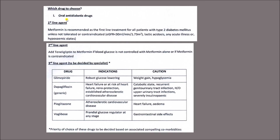There are first-line, second-line, and third-line drugs. The first-line drug is metformin — the biguanide — started at a low dose and increased up to the maximum tolerable level. When metformin at maximum tolerable dose is not working adequately, the second-line drug is teneligliptin. Third-line agents include glimepiride (a sulfonylurea), SGLT-2 inhibitors like dapagliflozin, pioglitazone (a thiazolidinedione), and voglibose (an alpha-glucosidase inhibitor).